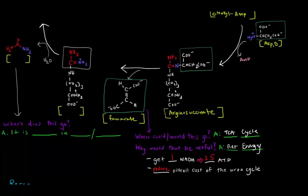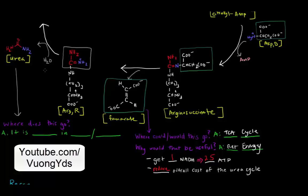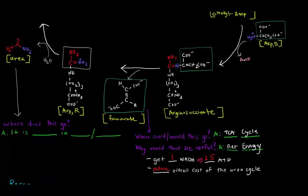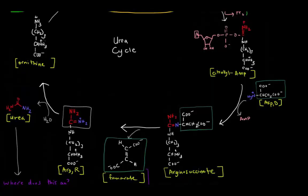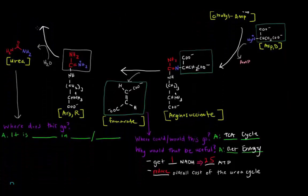Once that fumarate hops off, we're left with arginine. Arginine now has this red portion from the carbamoyl phosphate and this blue portion from the aspartate. That portion is actually going to be the part that hops off as urea. So we add water, get that portion to hop off as urea, and then that arginine regenerates ornithine, which is now ready for another round of the cycle. The urea product is excreted as a waste product — either in the urine or sweat.